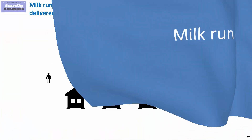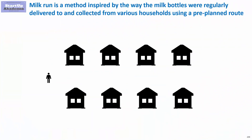Milk run is a method inspired by the way milk bottles were regularly delivered to and collected from various households using a pre-planned route. The milkman would know which house wants milk, walk through the alley, and deliver it where needed. In the same way, you can supply things in factories and offices.